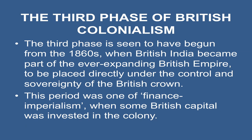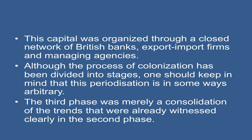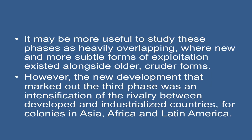The third phase is seen to have begun from the 1860s, when British India became part of the over-expanding British Empire, placed directly under the control and sovereignty of the British Crown. The period was one of finance imperialism, when some British capital was invested in the colony, organized through a closed network of British banks, export-import firms, and managing agencies. Although the process of colonization has been divided into stages, one should keep in mind that this periodization is in some ways arbitrary. The third phase was merely a consolidation of the trends already witnessed clearly in the second phase, and it may be more useful to study these phases as heavily overlapping, where new and more subtle forms of exploitation existed alongside older, cruder forms.